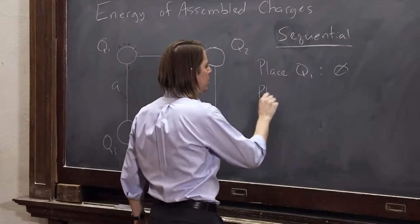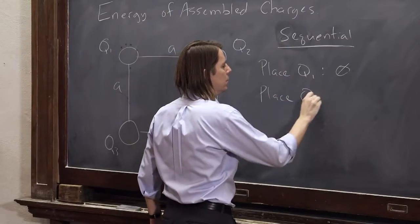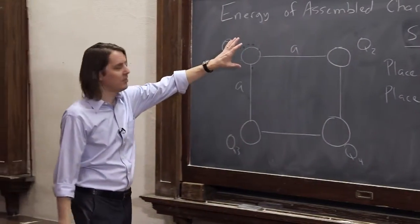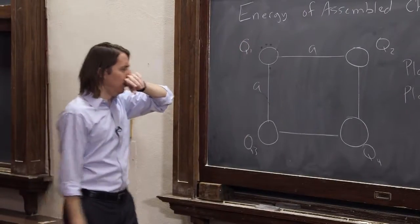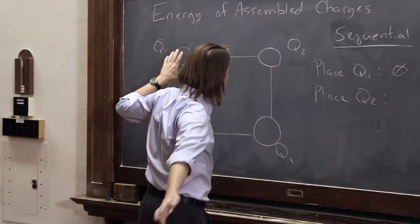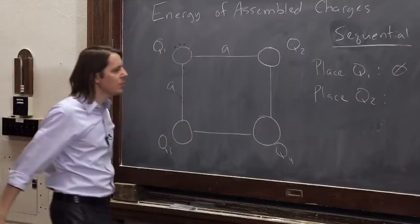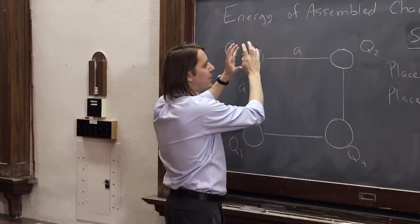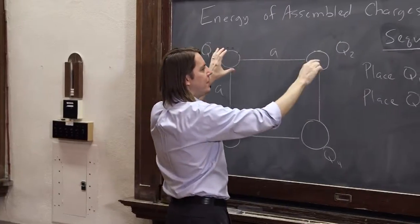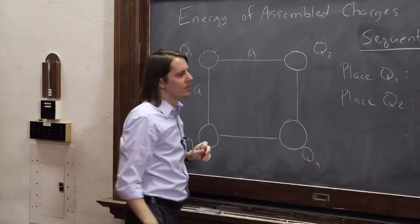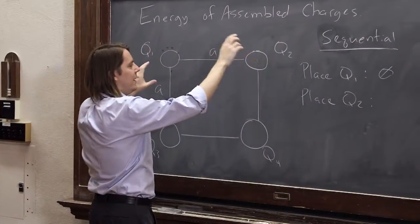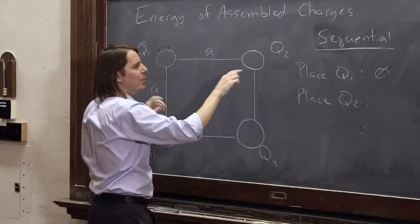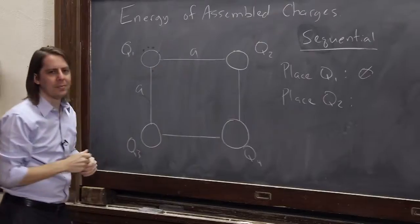Let's place Q2. So Q1 is now sitting here. It's there. Let's bring in Q2. Bring it from infinity and bring it up to here. Well, we know the potential that it's feeling, right? The potential created by one, Q1, is being felt by Q2. So we know that potential is K times Q1 over the distance. But here we're asking about the energy, not the potential.